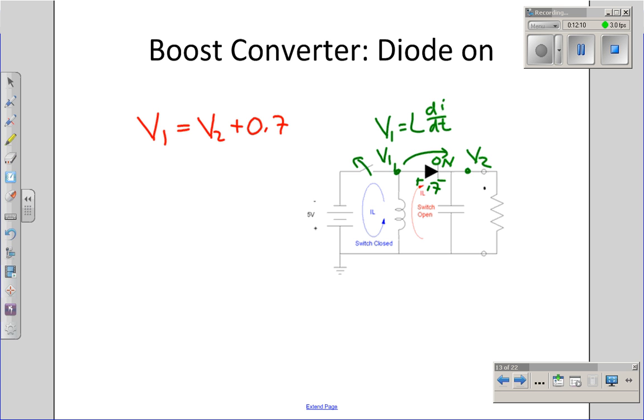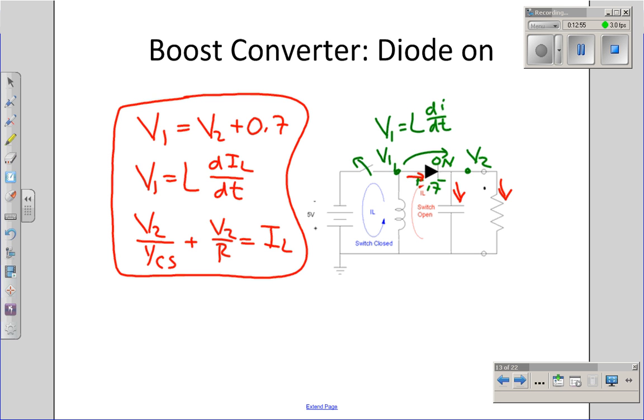I know for an inductor, V1 is LDIDT. And I also know at node V2, the current through the capacitor, the current through the resistor has to equal the current from the inductor. V2 over 1 over Cs, that's the current through the capacitor, plus V2 over R must be the current through the inductor.